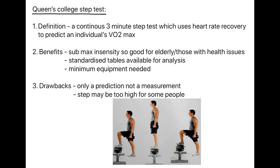The final method is the Queen's College Step Test. This is a continuous 3-minute step test which uses heart rate recovery to predict an estimate of VO2 max. After finishing the 3 minutes, you test your pulse each minute until it returns to your resting pulse, then look up your predicted VO2 max on the table. The benefit is it is sub-maximal intensity, so it is suitable for the elderly and those with health issues, standardised tables are available, and minimal equipment is required. The drawbacks are it is only a prediction not a measurement, and the step may be too high for some people — those rehabilitating from injury, the very elderly, or those with muscle atrophy conditions.